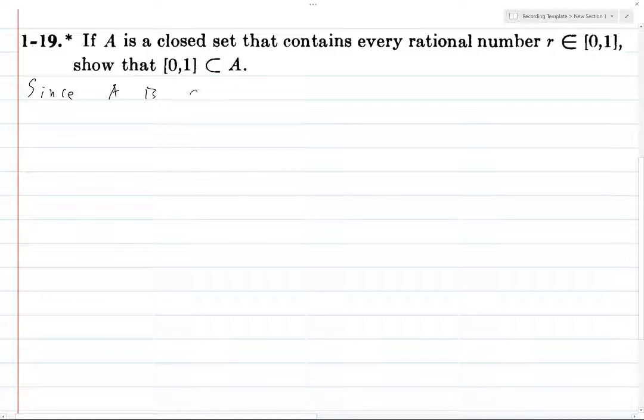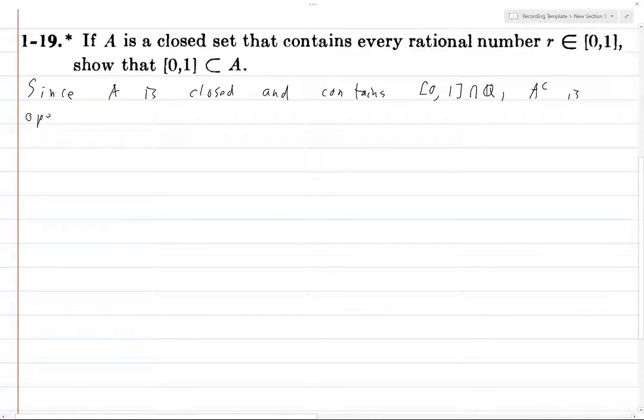Since A is closed and contains this interval intersected with the rationals, A complement is open and does not contain [0,1] ∩ Q.